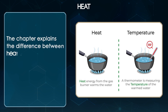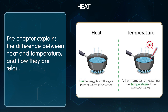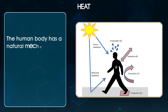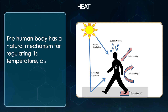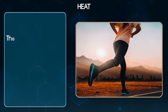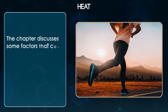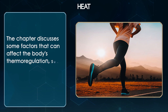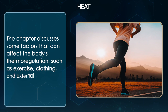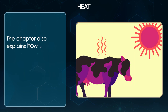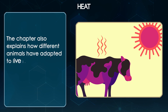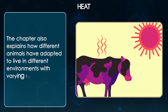The chapter explains the difference between heat and temperature and how they are related but distinct concepts. The human body has a natural mechanism for regulating its temperature called thermoregulation. The chapter discusses some factors that can affect the body's thermoregulation such as exercise, clothing and external temperature.